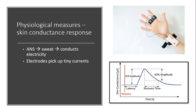You would wear a couple of electrodes, normally on your hand, and the signal is sent to a computer where it's picked up and measured. You can see this graph here as an example — in red you can see a stimulus being given, and then the reaction where the conductance of the skin goes up. It's actually measured in something called microsiemens.